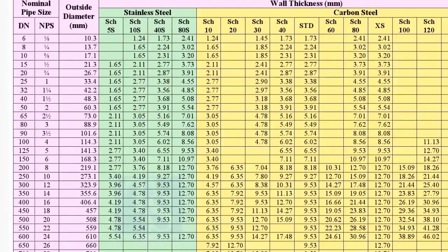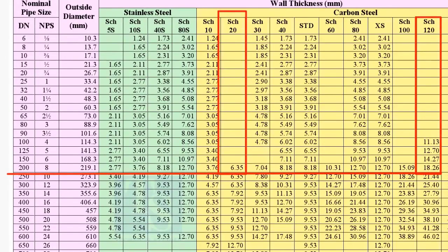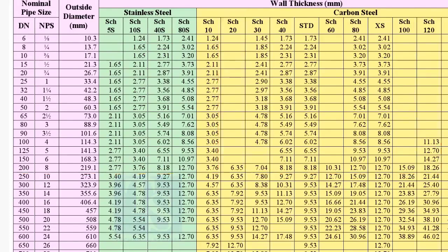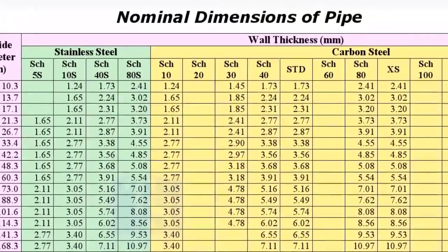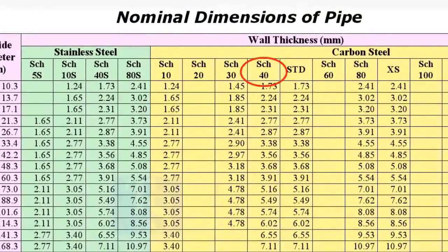Compare the thickness of an 8 inch pipe in the chart — see how the thickness increases as the schedule increases. What is the difference between schedule 40 and schedule 40S? The letter S in the schedule stands for the material stainless steel.